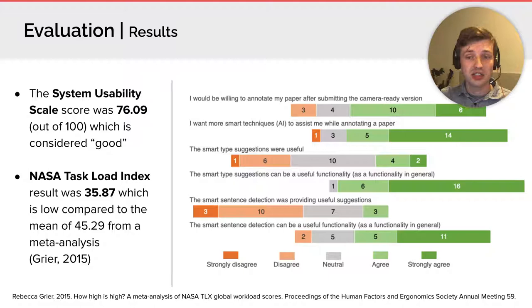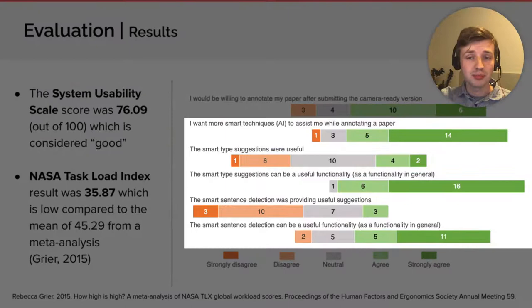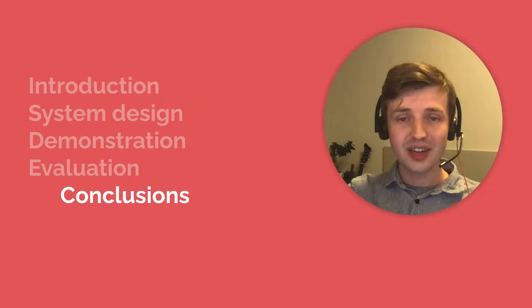Finally, here are some results of the participants' attitudes towards the interface. For example, most participants are willing to annotate a paper during the camera-ready submission. Interestingly, they were mostly positive about the integration of smart technologies in the interface. Even though they indicated that both the smart type suggestions and the sentence highlighting tools were not always providing helpful suggestions, they still appreciated the integration.